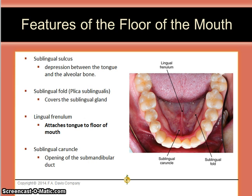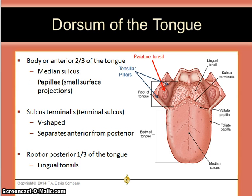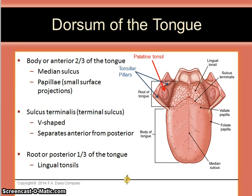The dorsum of the tongue consists of the body, which makes up two-thirds, and the root, which makes up one-third of the tongue. The sulcus terminalis, or terminal sulcus, is a V-shaped depression that separates the anterior from the posterior portions of the tongue. The lingual tonsils are posterior to the terminal sulcus, and the vallate or circumvallate papillae are anterior to the terminal sulcus.